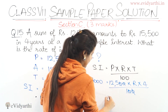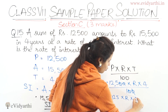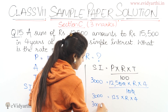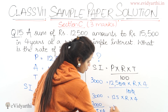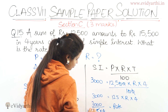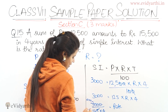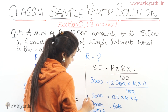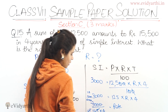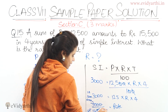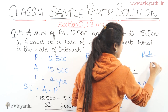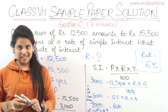Now we cancel what can be cancelled. We have 125 × R × 4 = 3,000. So R = 3,000 ÷ (125 × 4). Simplifying: 3,000 ÷ 500 = 6. Therefore the rate of interest is 6%.